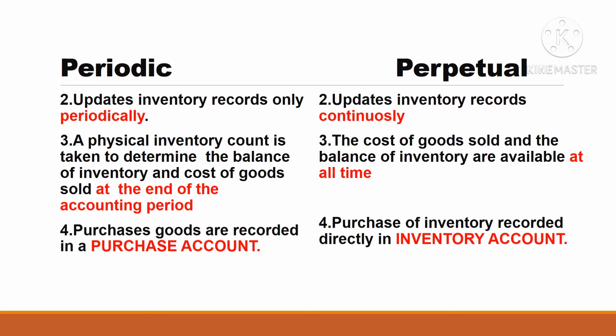The second difference: under periodic inventory system, it updates inventory records only periodically. Whereas under perpetual inventory system, it updates inventory records continuously.